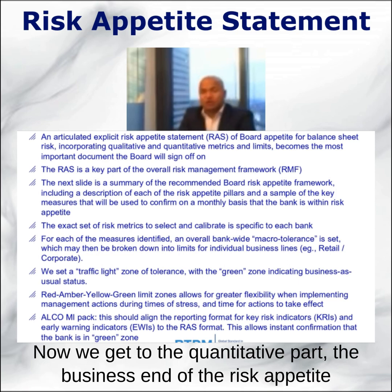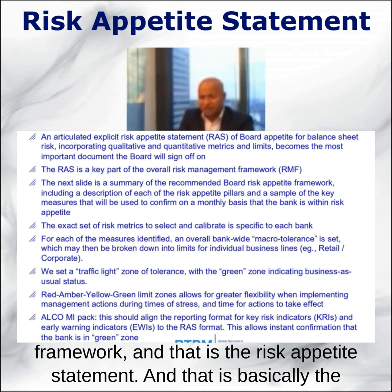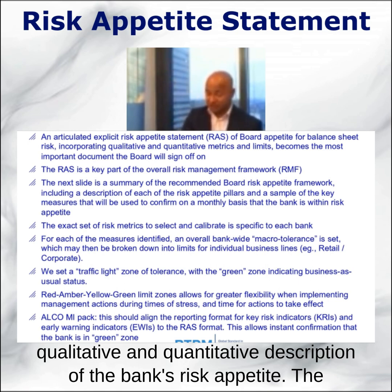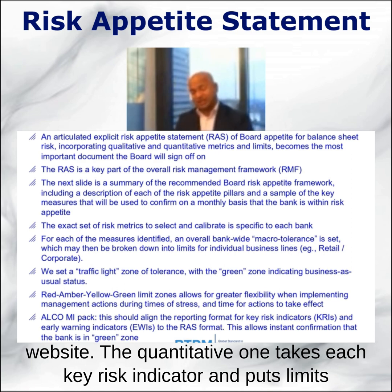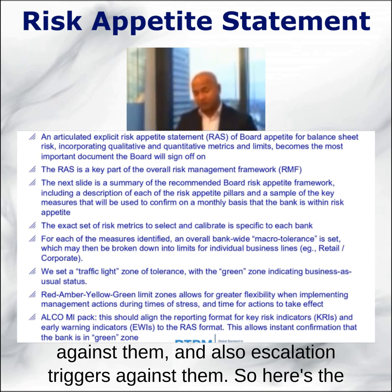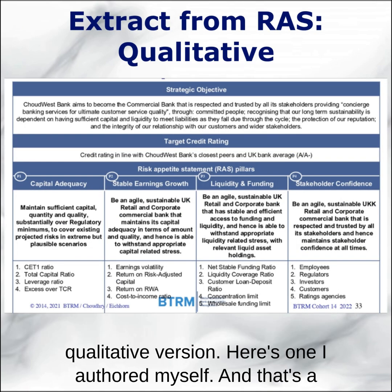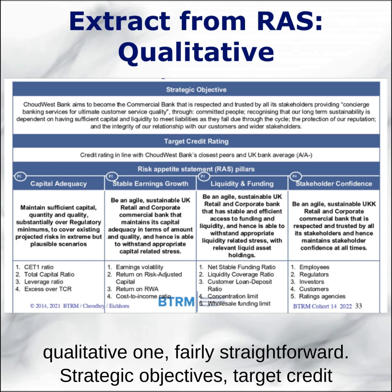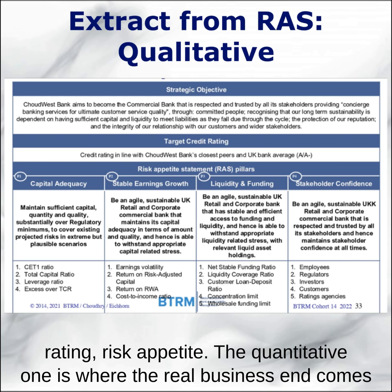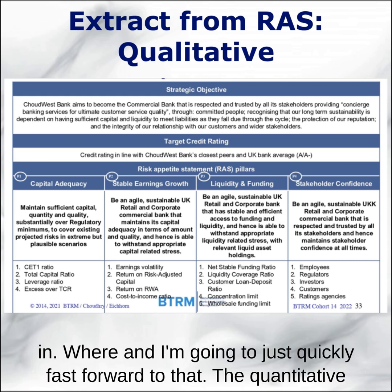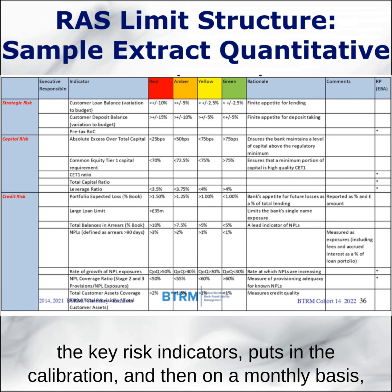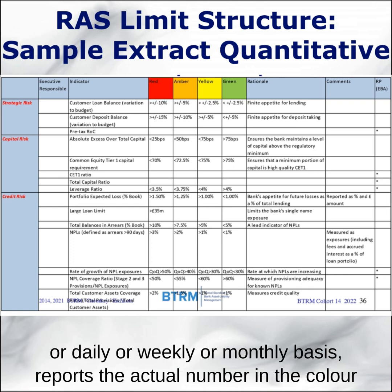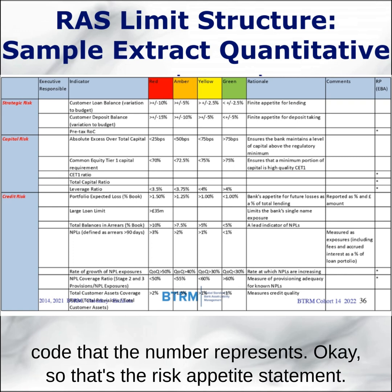That's the escalation process. Now we get to the quantitative part — the business end of the risk appetite framework — which is the risk appetite statement. That is basically the qualitative and quantitative description of the bank's risk appetite. The qualitative one is descriptive; it's the type of thing you'll see on the bank's website. The quantitative one takes each key risk indicator, puts limits against them, and also escalation triggers. It takes each risk type — strategic risk, capital risk, credit risk — assigns the key risk indicators, puts in the calibration, and then on a monthly, weekly, or daily basis reports the actual number in the colour code that the number represents.